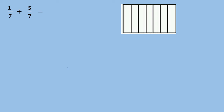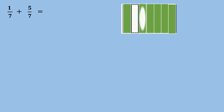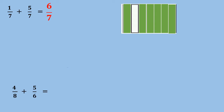In another way, we can imagine we have seven pieces. The first fraction is to take one piece from the total seven pieces. The second fraction is to take five pieces from the total seven pieces — one, two, three, four, and five. The addition of these two fractions is to count all the taken parts over the total, which is seven. We have six green pieces, so the answer is six over seven.